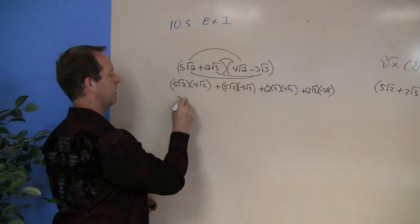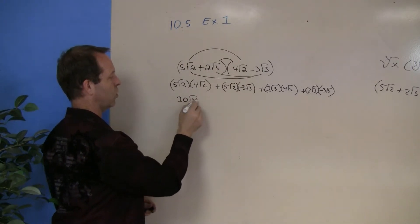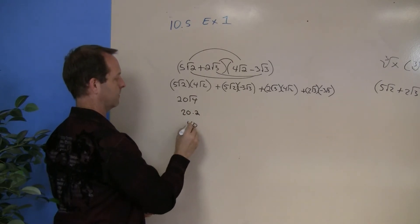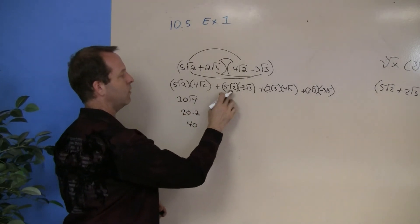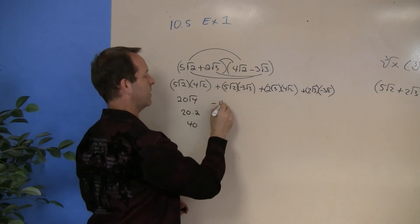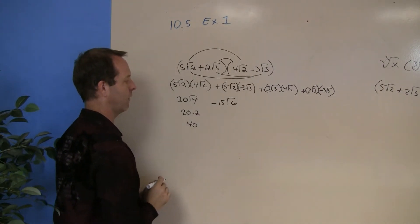So 5 root 2 times 4 root 2. That becomes 20 root 2 times 2, which is 4, or 20 times 2, or 40. Over here, I have 5 root 2 times negative 3 root 3. That becomes negative 15 root 6. And I can't reduce that down any further.